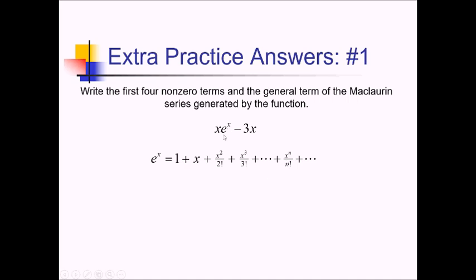We're going to take this one transformation at a time. I'll start by doing x times e to the x — multiplication happens before the subtraction, so I'm essentially multiplying all of this by x. That gives x plus x squared plus x cubed over 2 factorial plus x to the fourth over 3 factorial, and more generally, x to the n plus 1 over n factorial.